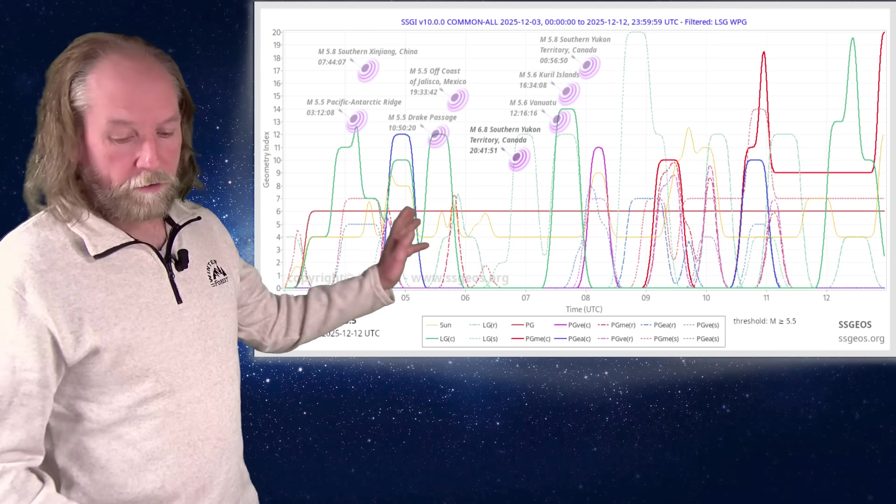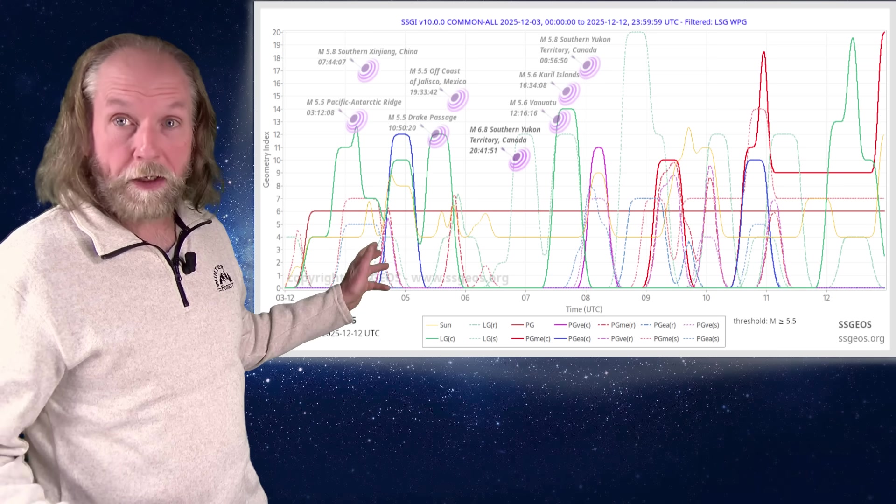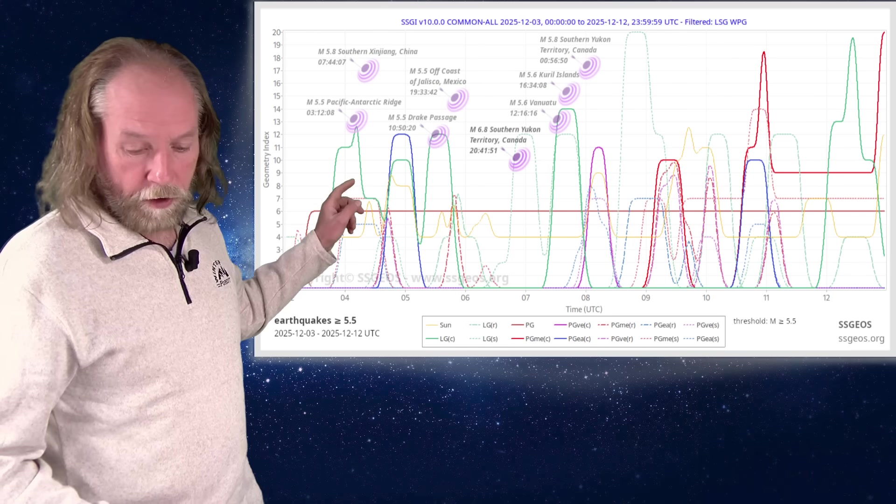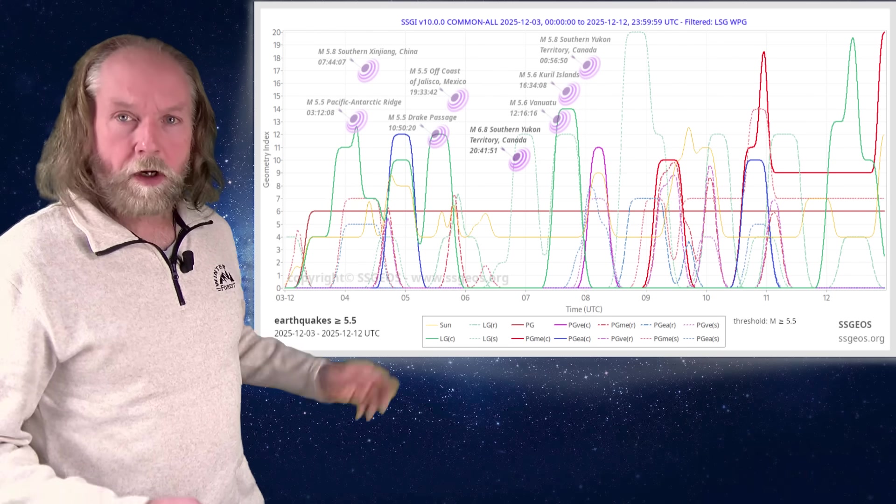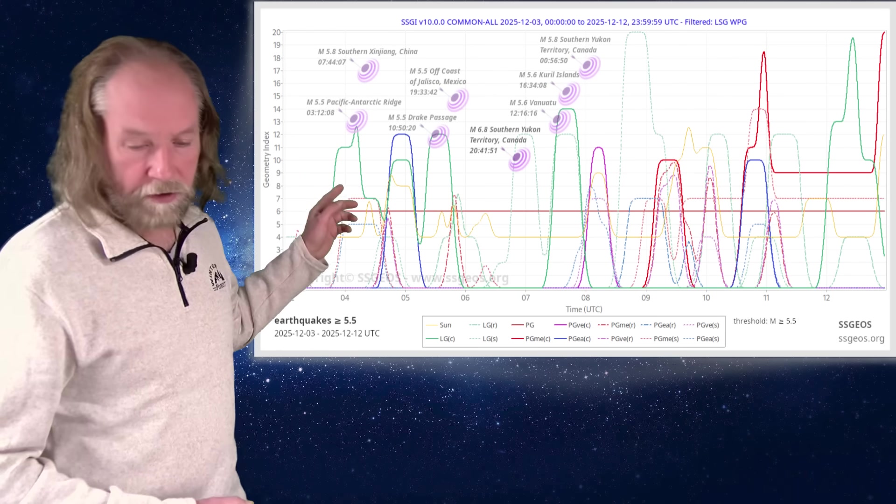And here on the SEGI graph, we see that we had three lunar peaks, as I explained in the previous update, with Venus, the Sun, the full Moon, and with Mars. We see some seismic response there in the mid to high 5 magnitude range, four in total